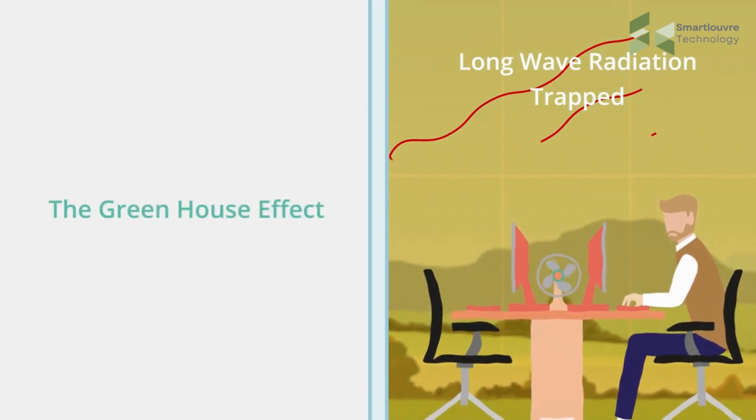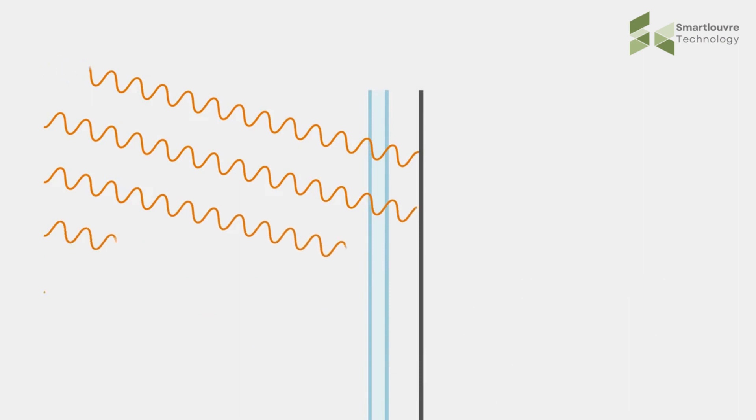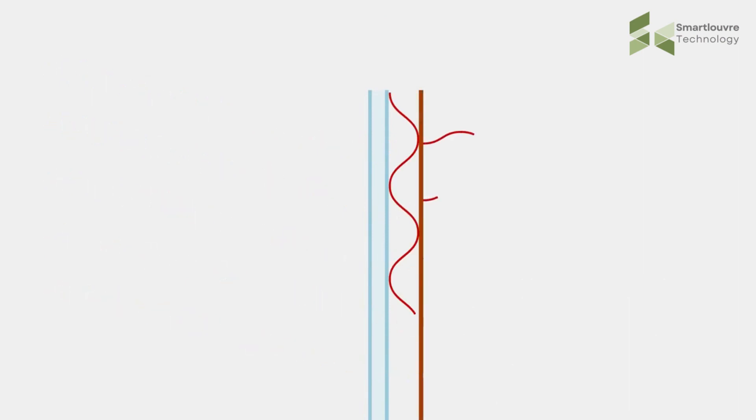Vision-blocking internal window treatments like drapes and blinds just trap the heat and re-radiate it, which is ineffective for controlling solar heat gain—the radiator effect.